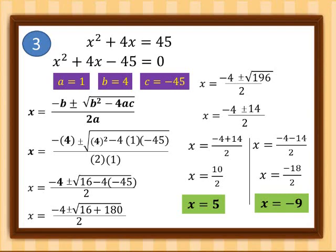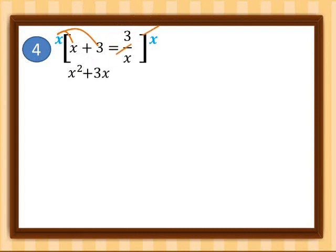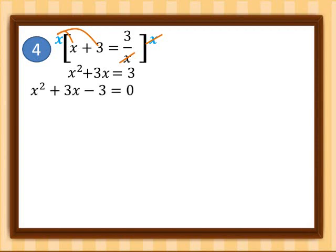Let's proceed to example number 4: x + 3 = 3/x. It's not in standard form, so we multiply both sides by x and distribute: x² + 3x = 3. Rewriting into standard form gives x² + 3x − 3 = 0. So a = 1, b = 3, and c = −3.